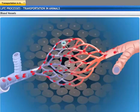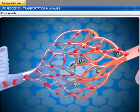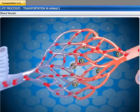The smallest vessels have walls which are one cell thick and are called capillaries. The thin walls of the capillaries allow oxygen and nutrients to pass from the blood into the tissues, and waste products from the tissues into the blood.